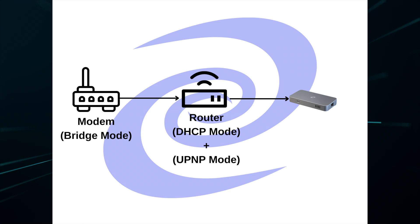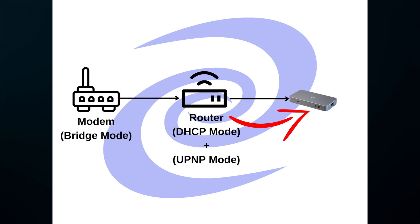Now it's not exactly the same as having a direct public IP address from your modem, but it's as close as you can get and you will still see some benefits with using UPnP. The first network topology is modem in bridge mode passing the public IP to the router in DHCP mode, while using Universal Plug and Play — UPnP — your Deeper Connect will have the ability to access the public IP.